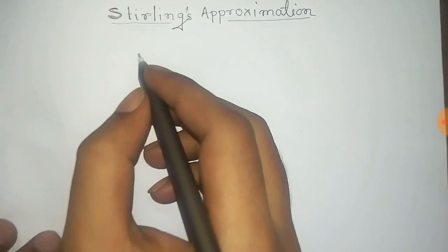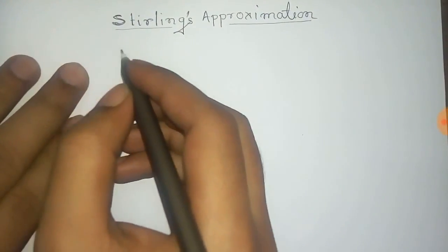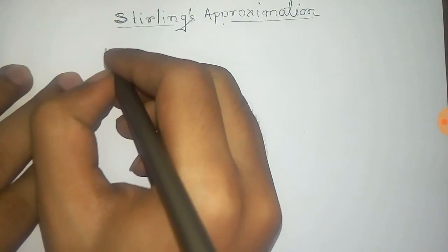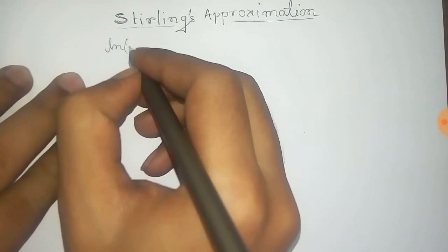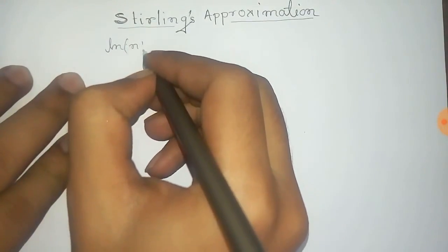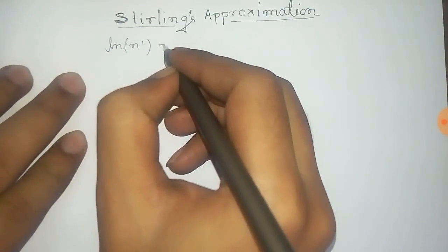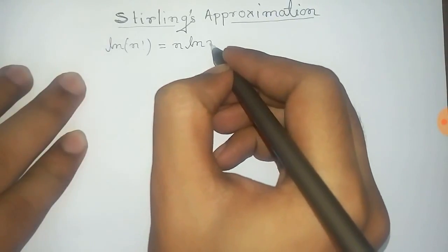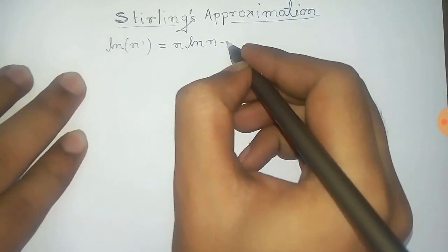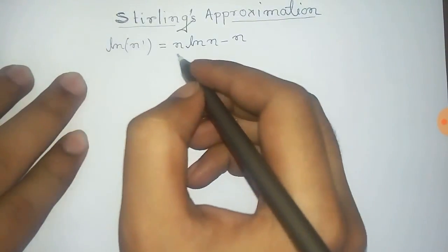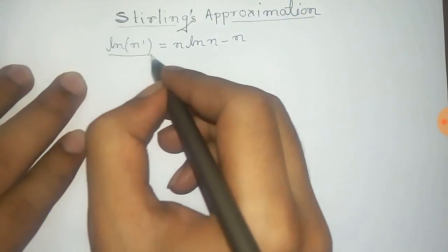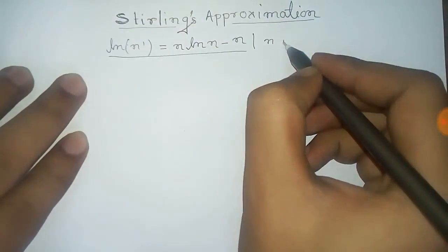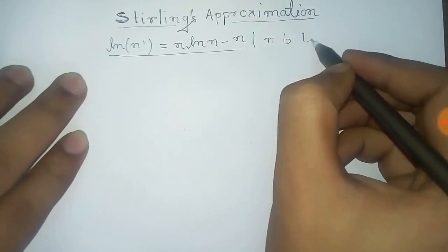In this video we prove the Stirling approximation, or Stirling formula, for statistical mechanics. This formula states that log of n factorial is equal to n logarithm of n minus n. This is the formula we have to derive, where n is very large.